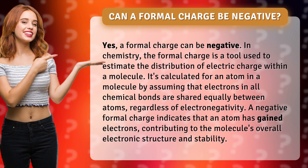In chemistry, the formal charge is a tool used to estimate the distribution of electric charge within a molecule. It's calculated for an atom in a molecule by assuming that electrons in all chemical bonds are shared equally between atoms, regardless of electronegativity. A negative formal charge indicates that an atom has gained electrons, contributing to the molecule's overall electronic structure and stability.